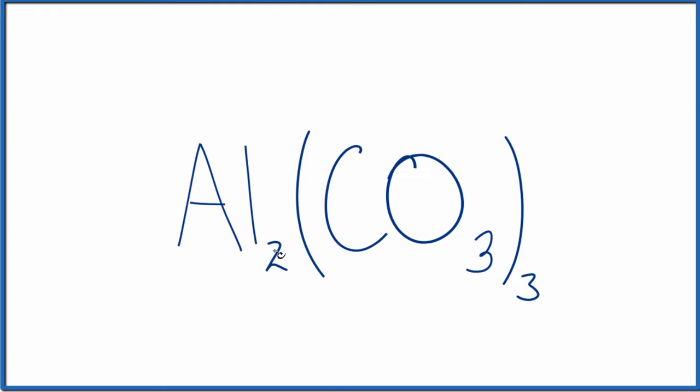Aluminum is in group 13, sometimes called 3A. That's going to be 3 plus for each one of these aluminum atoms. The carbonate ion, that's a polyatomic ion. This is just one you need to memorize. The whole CO3, the whole carbonate ion, has an ionic charge of 2 minus.